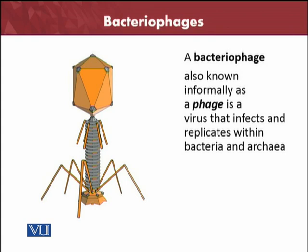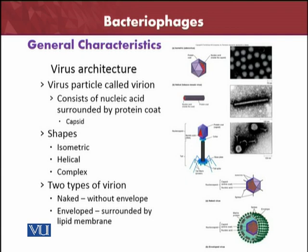The bacteriophage is also known simply as the phage. They infect bacteria and replicate inside the cells of bacteria and archaea. This is the standard shape of the bacteriophage, containing a head and a tail. The virus particle is called a virion. It consists of nucleic acid surrounded by a protein coat. The virion consists of nucleic acid, shown here in red, surrounded by the protein coat, also called the capsid. This is the helical structure.